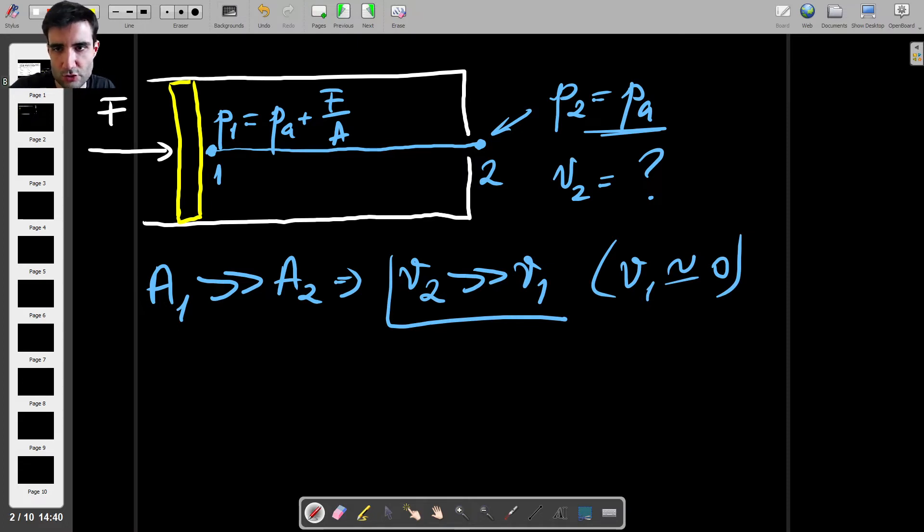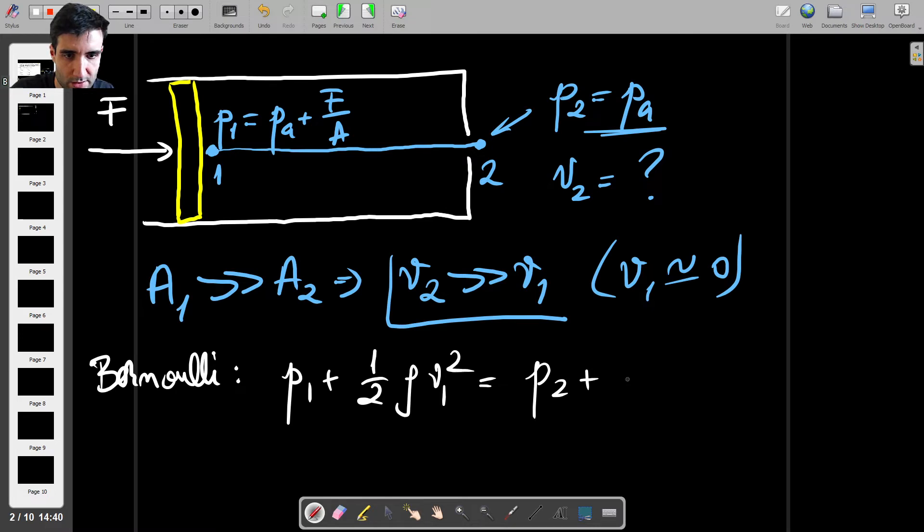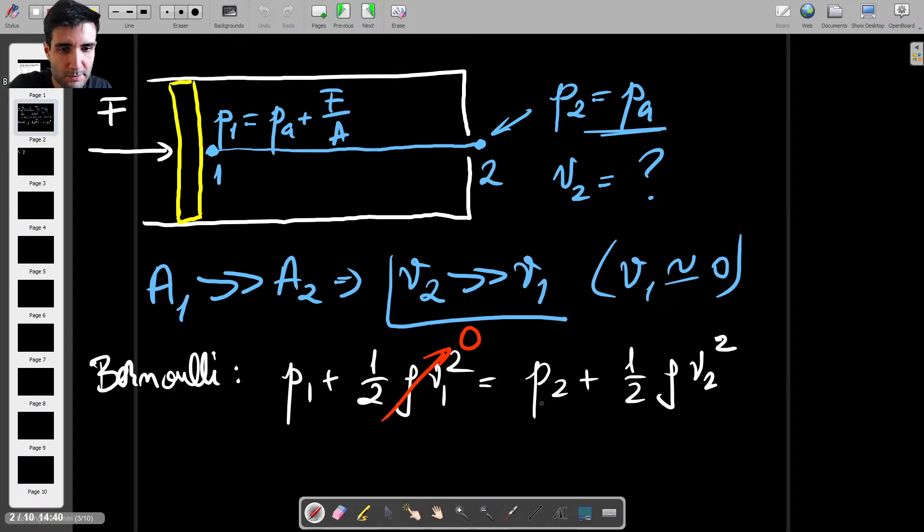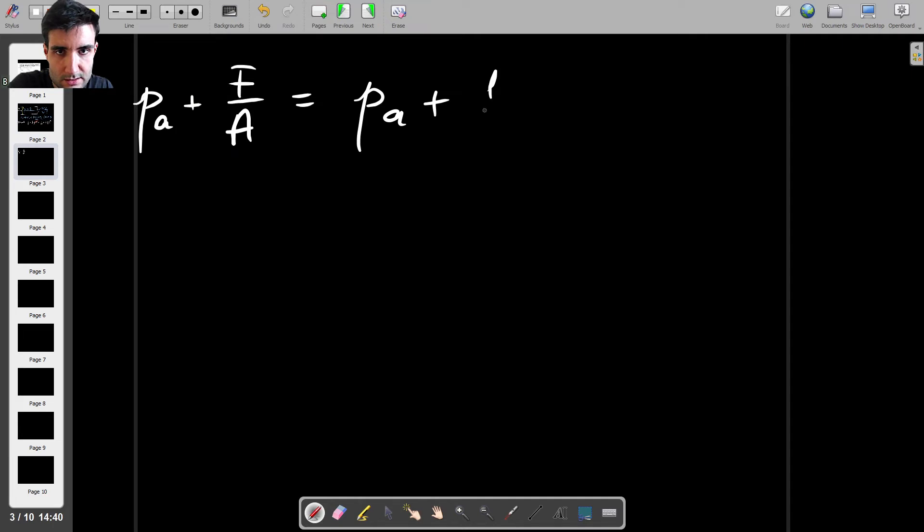And there's also no level difference because this streamline is perfectly horizontal. So what we can do is when I write Bernoulli, we ignore the potential energy term. So Bernoulli tells us that P1 plus half rho V1 squared equals P2 plus half rho V2 squared. There's no level difference so we don't bother with the rho GZ terms anywhere. So this is 0. And now I'm going to replace P1 and P2 with what they actually are. So instead of P1 I'm going to write PA plus F over A. This is what we found P1 to be. And this equals P2, but P2 is just atmospheric pressure. And this is plus half rho V2 squared. That's the velocity that we're trying to find. So we can cancel out the PAs.